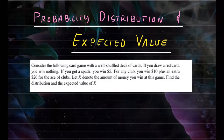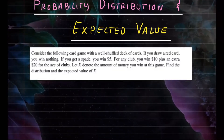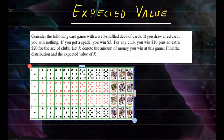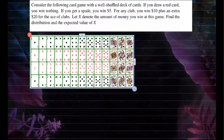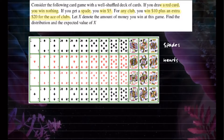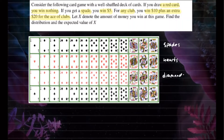If you're not familiar with a deck of cards, I have an image for you here. So this is the deck of cards. We know there are 52 cards in an ordinary deck. If you draw a red card, you win nothing. If you get a spade, you win $5. For any club, you win $10, plus an extra $20 for the ace of clubs. Here you can see spades, hearts, diamonds, and clubs — the four suits.